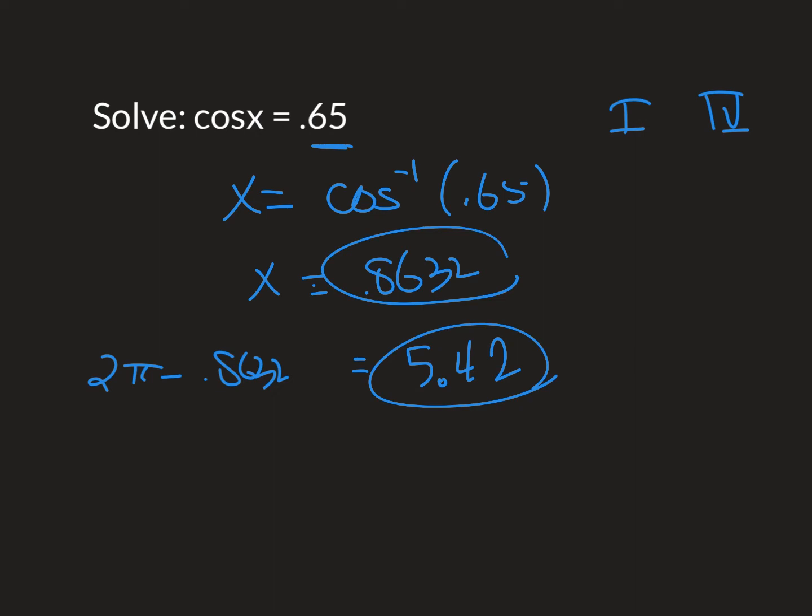Okay, so there's your two answers. And again, if you need to put all the answers, I would add plus 2k pi. And your book's going to sometimes say just find all the answers between 0 and 2 pi. And if they do that, you don't have to write this. If they say find all the solutions, then we'll have to add the 2k pi.